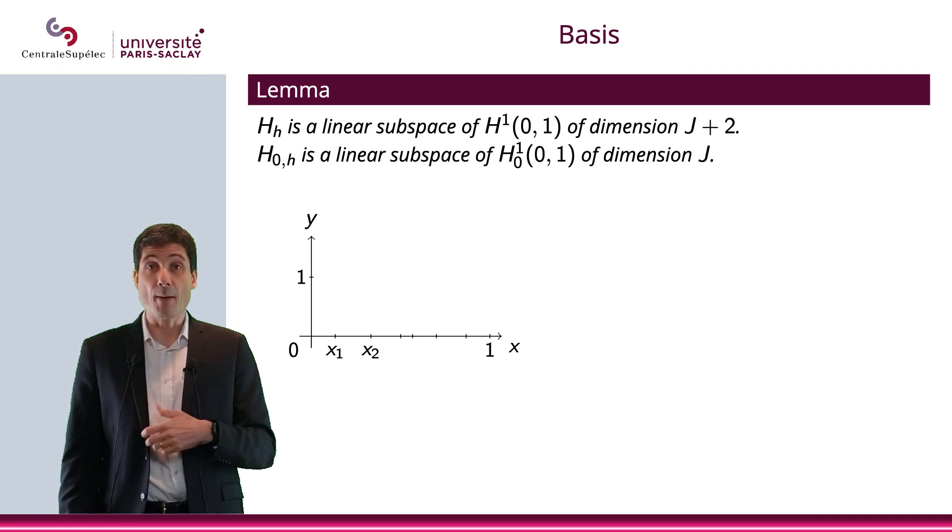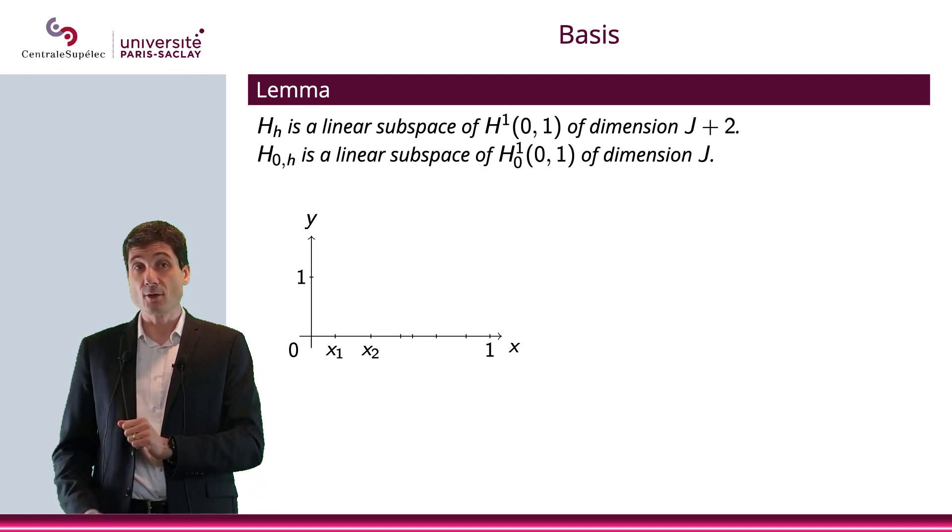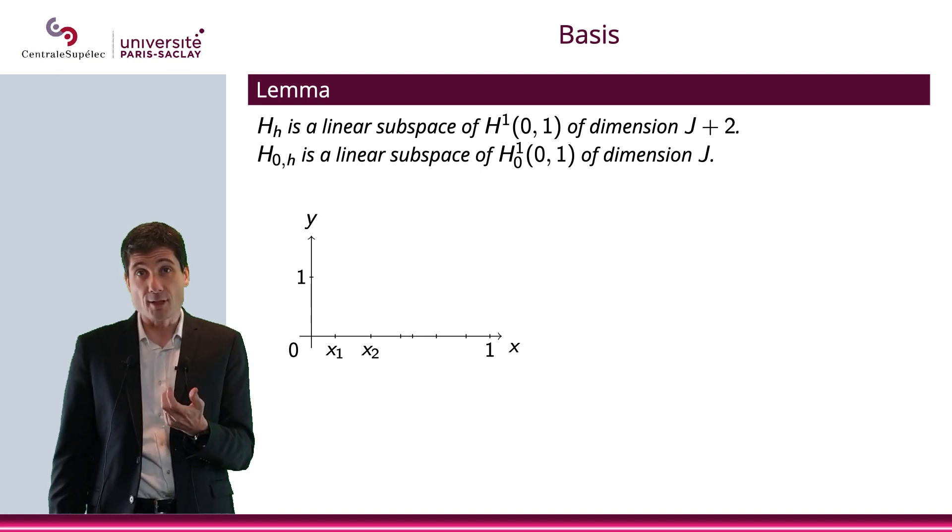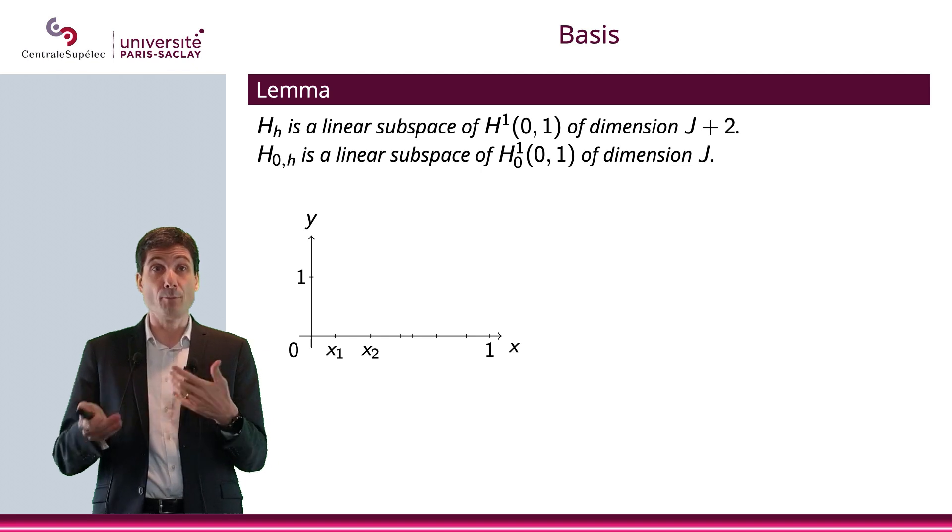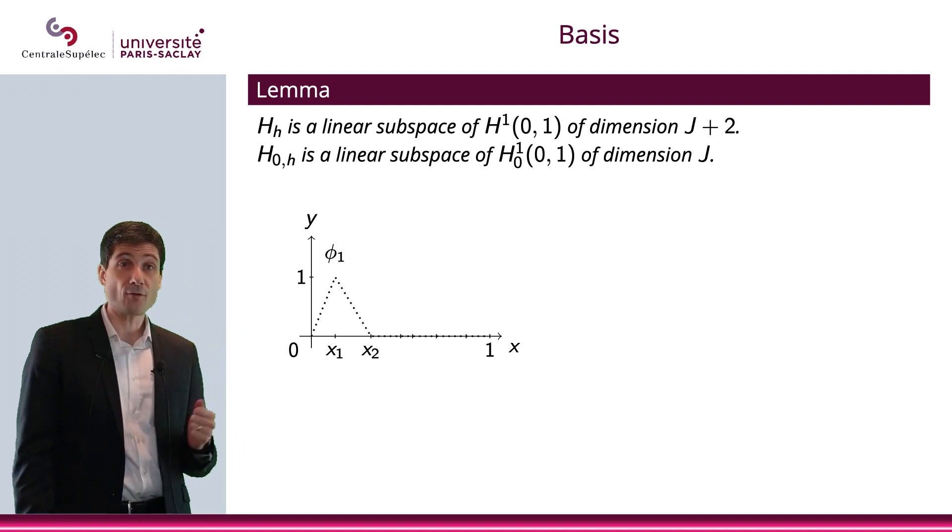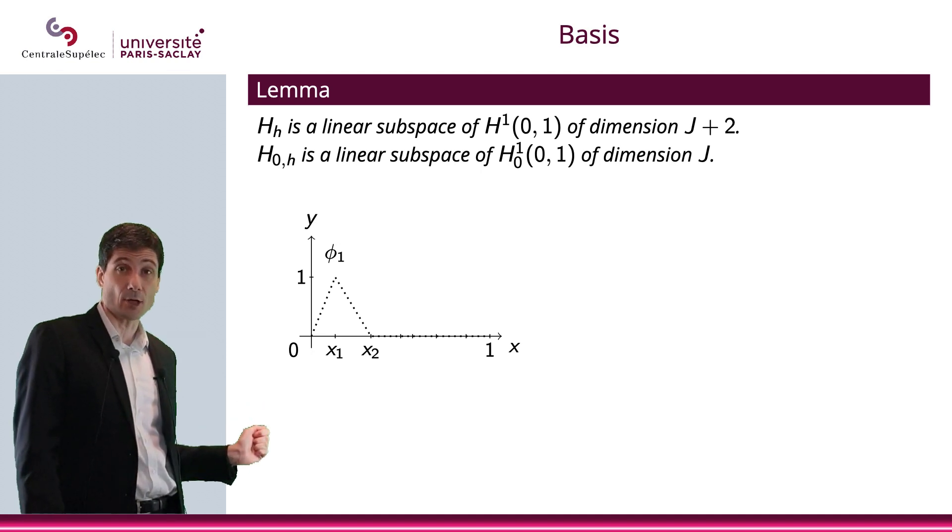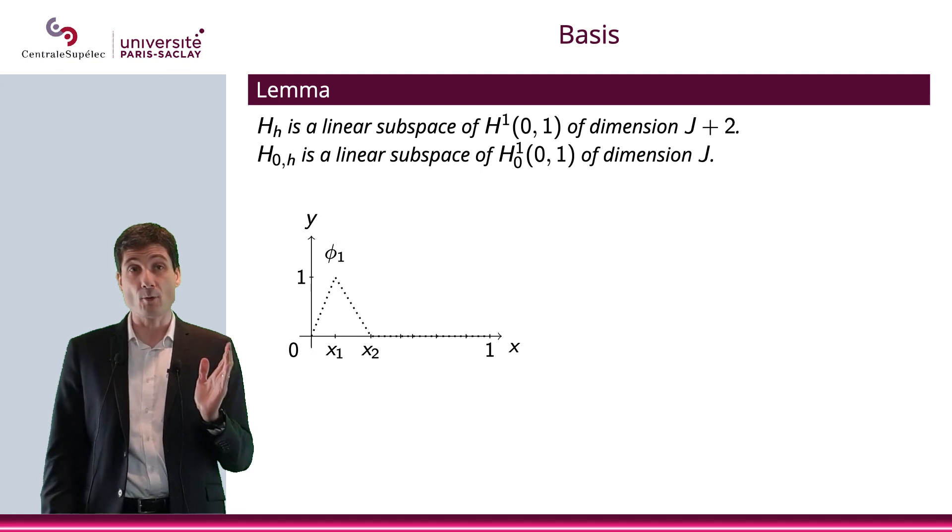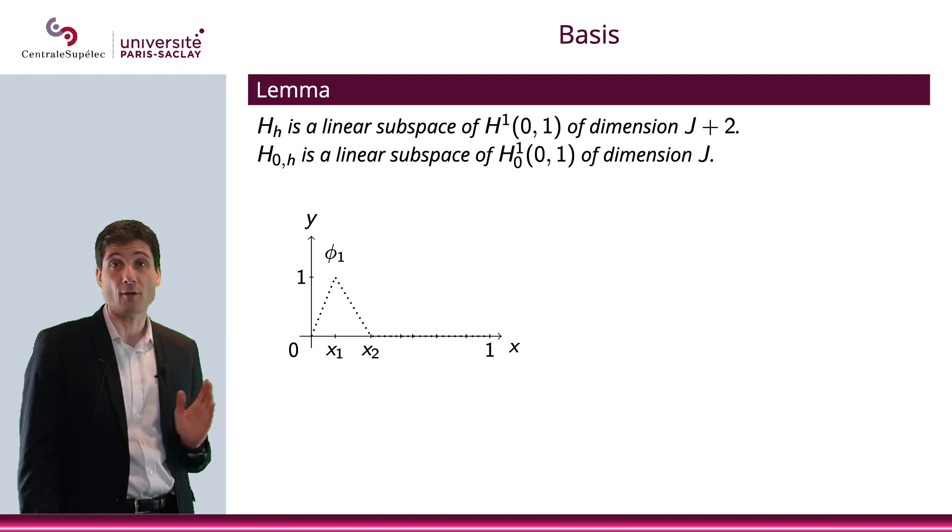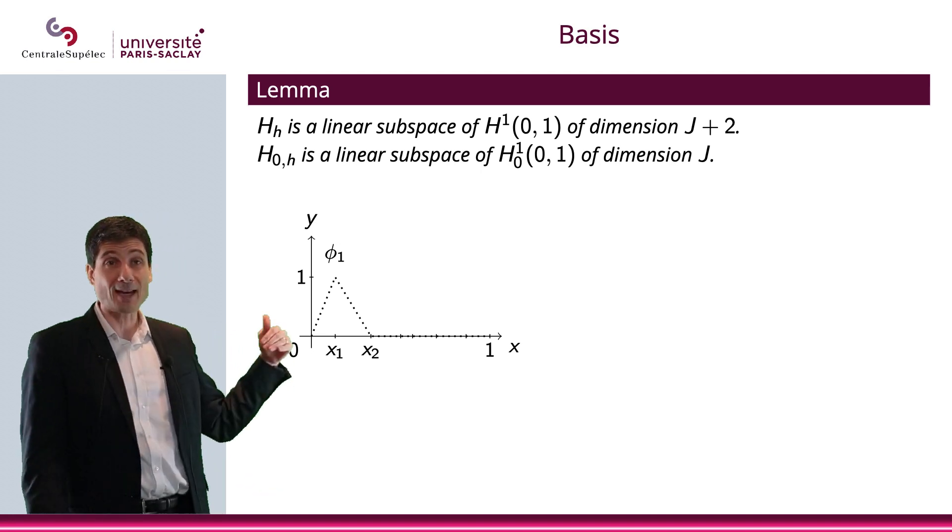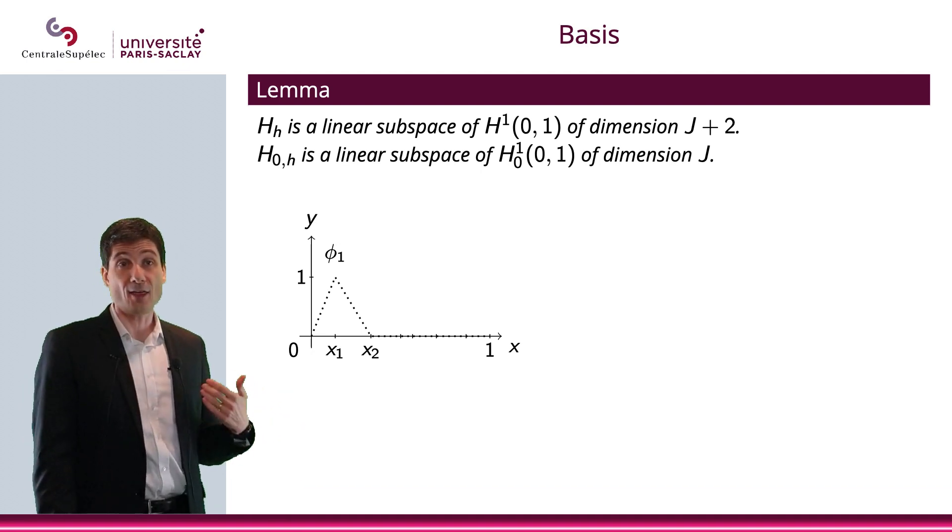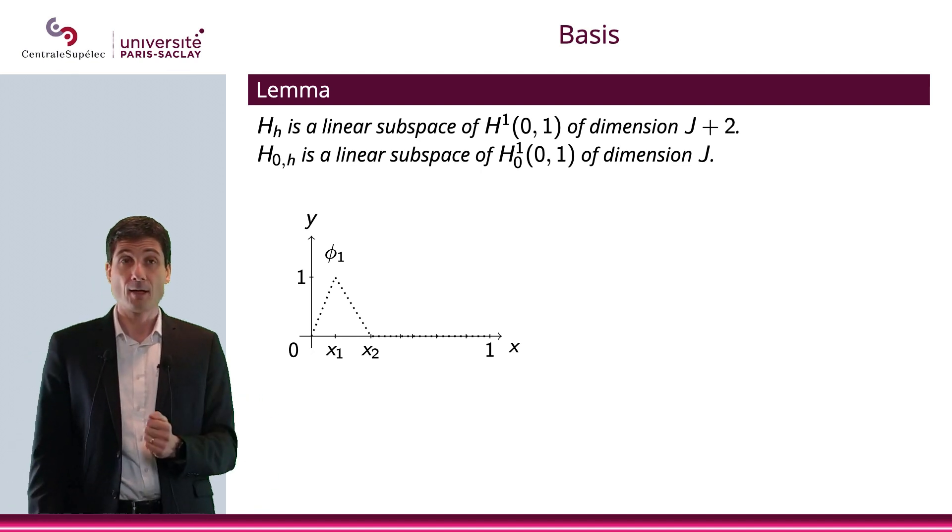Now, I will give you a basis of both H_h and H_{0,h}. For H_h, I'm going to have to give you J+2 vectors, functions, with which I can basically build every function of H_h by linear combination. What I'm going to choose is this hat function. So here is the first one, φ_1. φ_1 starts at 0, goes up to 1 when we're at x_1, which is h. So basically φ_1(h) = 1. Therefore, the slope here of that function is 1/h. And then it goes back down with a slope negative 1/h, which is 0 when you reach x_2, which is basically 2h. And then after that, it will be equal to 0.